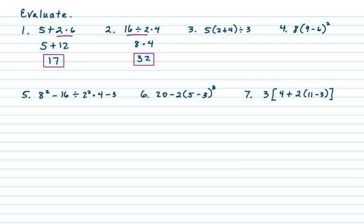On number three we have 5 times the quantity 2 plus 4, then divided by 3. The first thing we do — the highest priority — is simplify what's in the parentheses: 2 plus 4 is 6. So we have 5 times 6 divided by 3. We do the multiplication first because it's on the left. 5 times 6 is 30, divided by 3, which is 10.